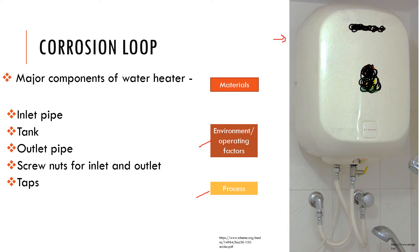In this water heater, which we all know very well, there are a few major components: you have the inlet pipe, the outlet pipe, the tank, screws and nuts for the pipes, and then you have the inlet and outlet taps.